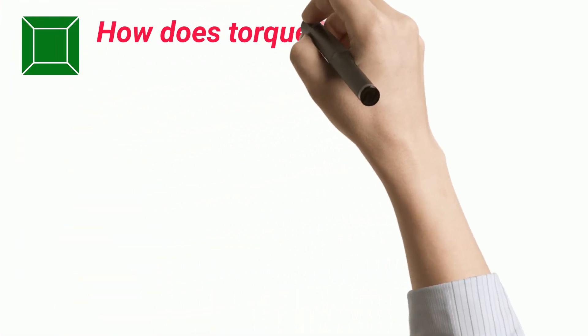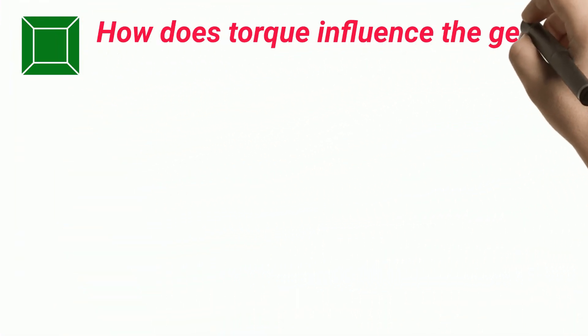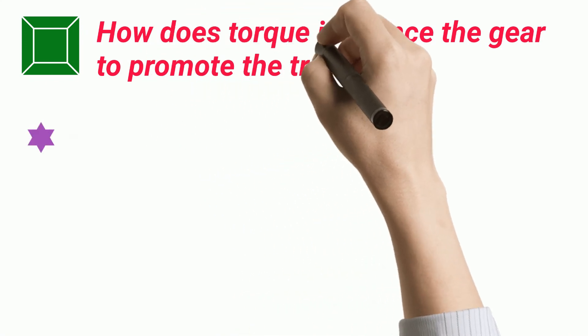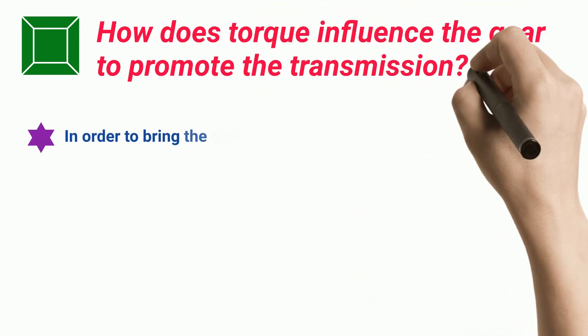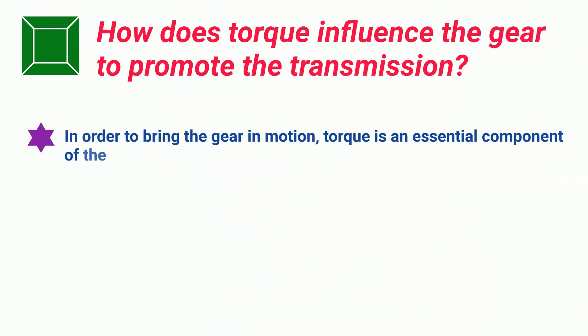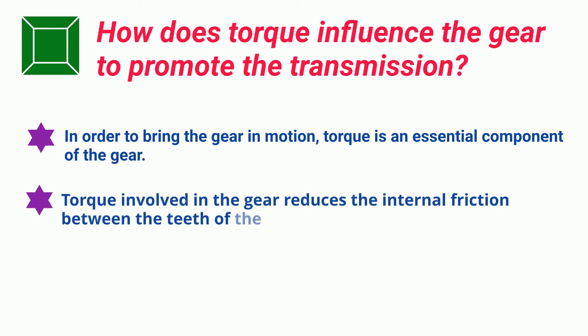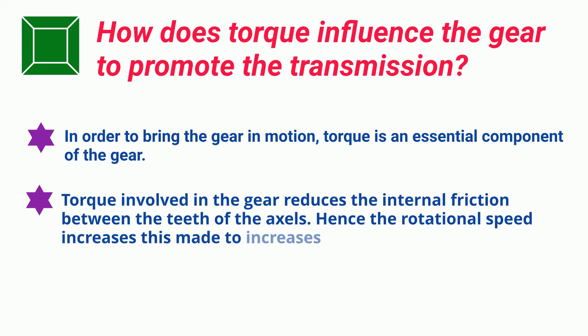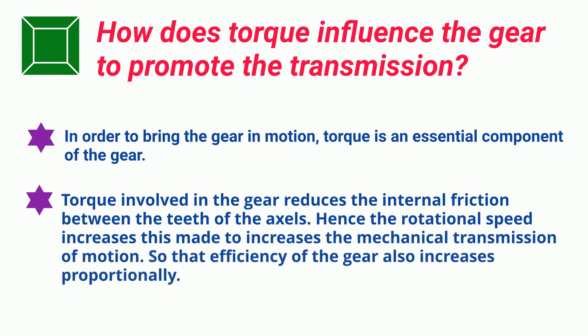How does torque influence the gear to promote transmission? In order to bring the gear into motion, torque is an essential component. Torque involved in the gear reduces the internal friction between the teeth of the axles, hence the rotational speed increases, which increases the mechanical transmission of motion, so that the efficiency of the gear also increases proportionally.